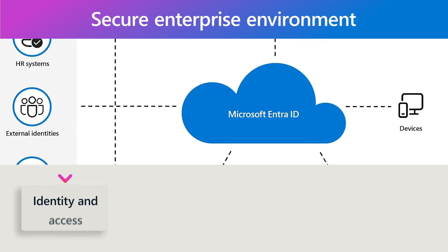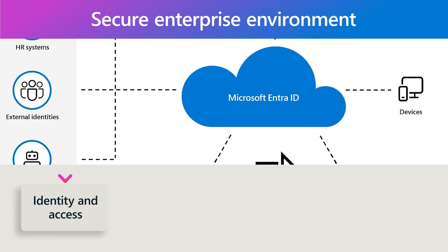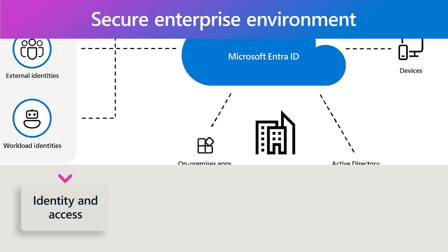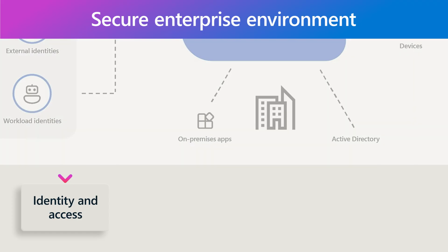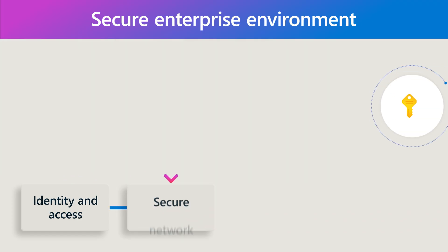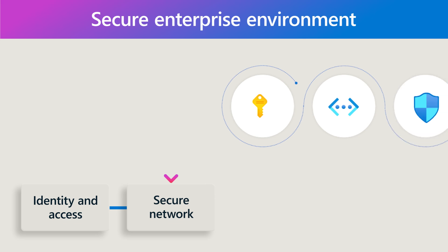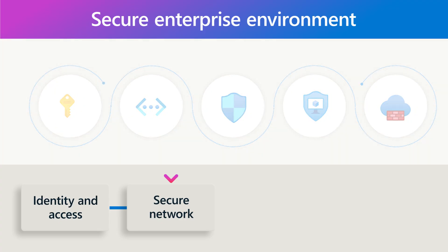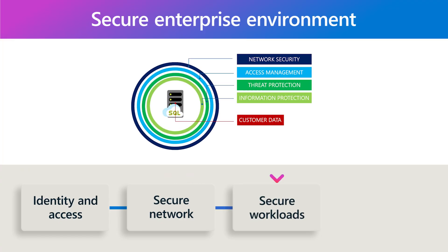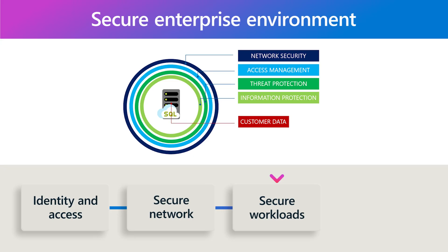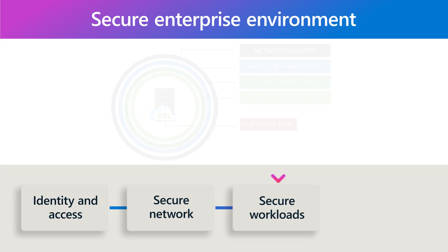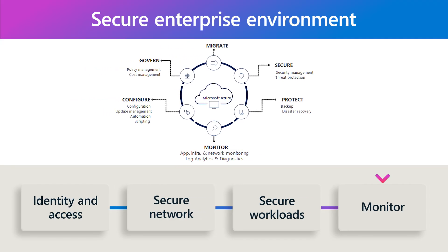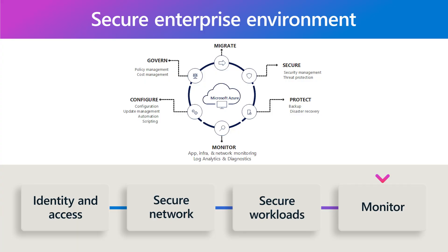First, we cover identity and access, examining how this outermost boundary of authentication and authorization protects an organization from harm. Next, we cover the secure network, focusing on how the cloud has evolved beyond a traditional walled garden approach. Third, we secure our compute, storage and database workloads — the three key workhorses in any application. And finally, it's over to the Security Operations Center to make sure everything is monitored effectively, with threats identified and addressed as soon as they're found.